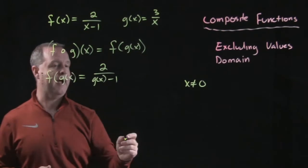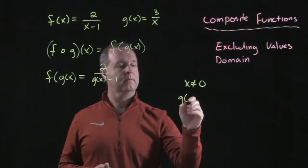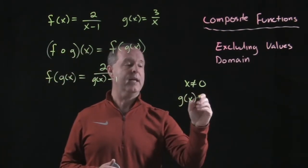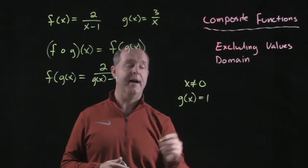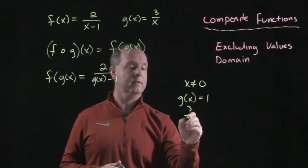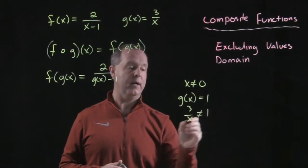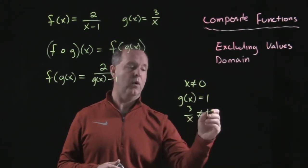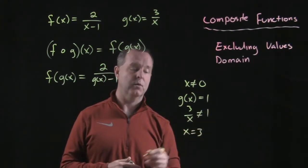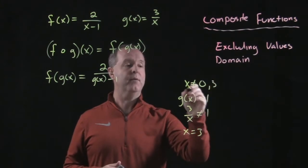So we cannot have a value where g of x equals one. g of x was three over x. When is that equal to one? That's equal to one when x equals three. So we also have to exclude three.